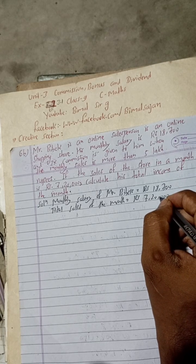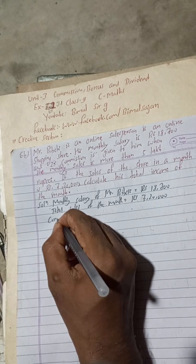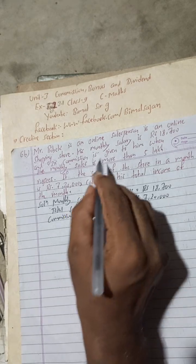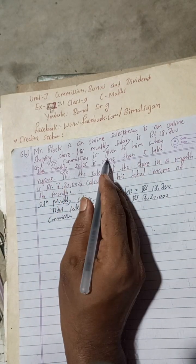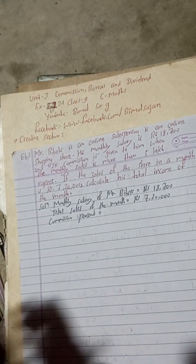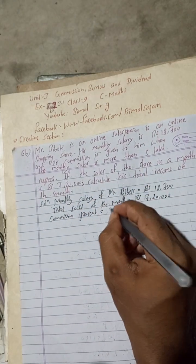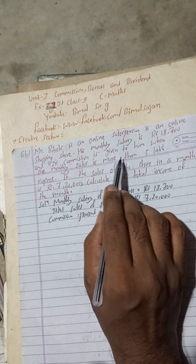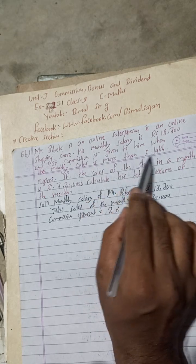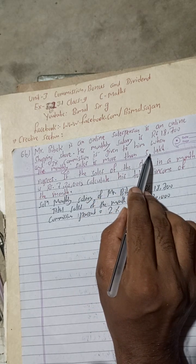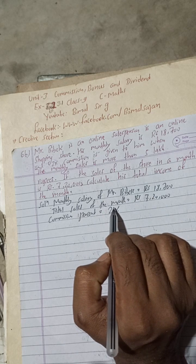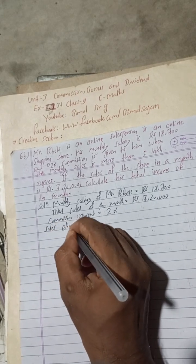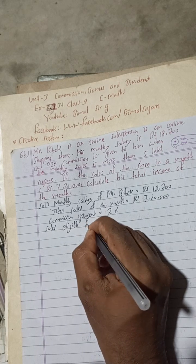The commission percent is 2%, given to him when the monthly sale is more than five lakh. So the two percent commission is only applicable on sales above five lakh. That means up to five lakh he will not get the two percent. So we can now write here: sales eligible for commission.